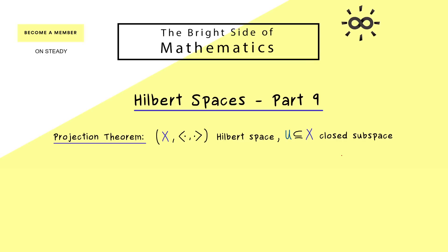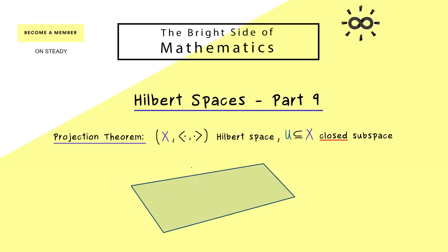So we have two ingredients: it's a subspace, but it's also a closed subset in the Hilbert space. For example, we could visualize u as a plane in the space. But please don't forget, in general u could also have an infinite dimension.